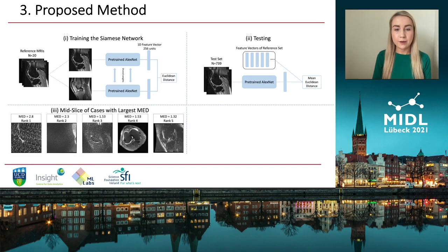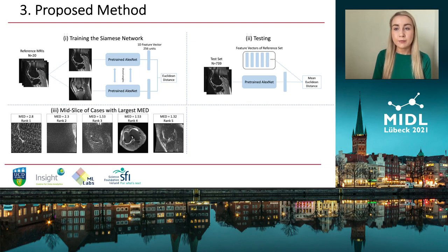Here you can see the five MRIs with the largest mean Euclidean distance. The first and second MRI contain no relevant anatomical information. The third and fifth MRI are of very poor quality and could be referred to an expert to investigate if they should be removed from the dataset. The fourth one is an MRI acquired from the axial plane that has been mistakenly included in the sagittal plane data.